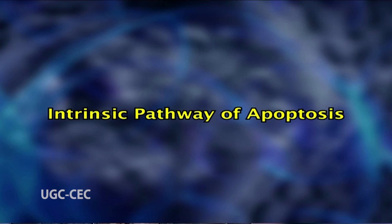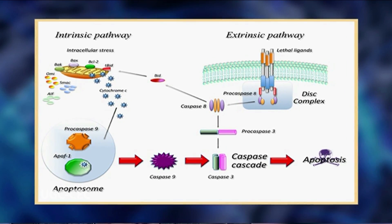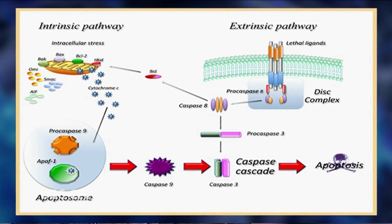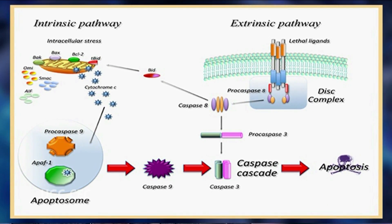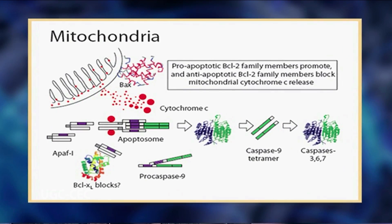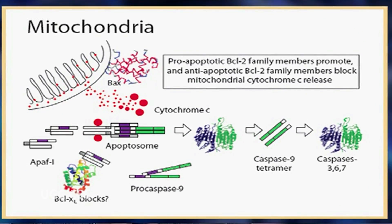In the intrinsic pathway of apoptosis, internal stimuli such as irreparable genetic damage, lack of oxygen (hypoxia), extremely high concentrations of cytosolic calcium, viral infection, or severe oxidative stress trigger apoptosis. Activation of the intrinsic pathway is regulated by members of the BCL-2 family of proteins, which are characterized by the presence of one or more BH domains.